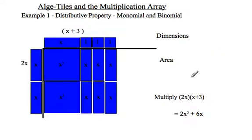And again, if we look at the shortcut that was illustrated in the previous MathCast, 2x times x is 2x squared, 2x times 3 is positive 6x. That shortcut still seems to hold.